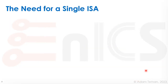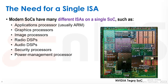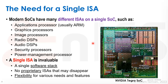And that's not all — there really is a need for a single ISA. An SOC like this has lots of different blocks, each with their own programmable processors: application processors, graphic processors, image processors, radio DSPs, audio DSPs, security processors, power management processors, and more. A lot of them have their own proprietary software stacks, which causes a real headache — it's hard to maintain, hard to develop, and leads to bugs. A single ISA is invaluable.